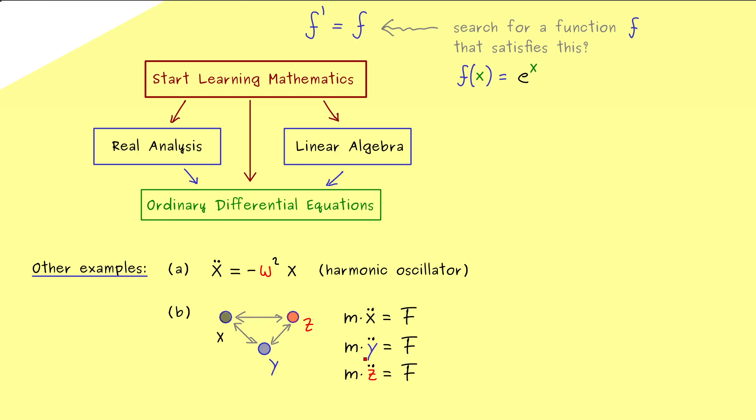However this force f now is a function that depends on all the positions here. Hence the equations for the different planets here are connected by this force. So you see indeed we have nine differential equations that are completely cross linked here. Hence we would say we have a whole system of differential equations and we want to solve the whole system.